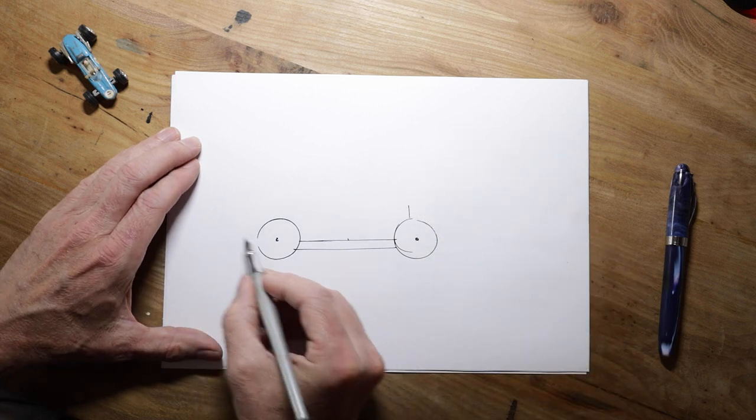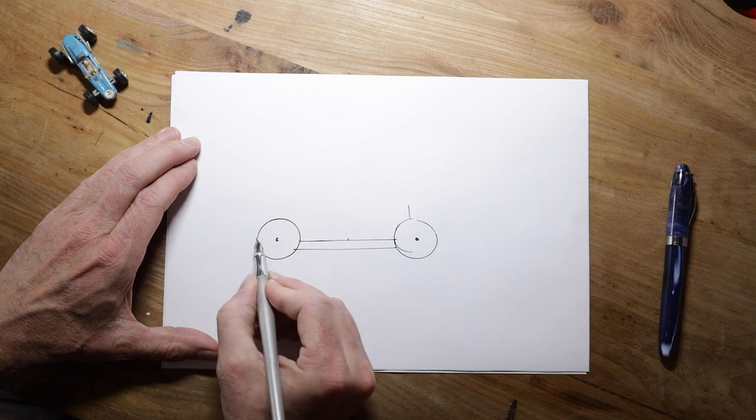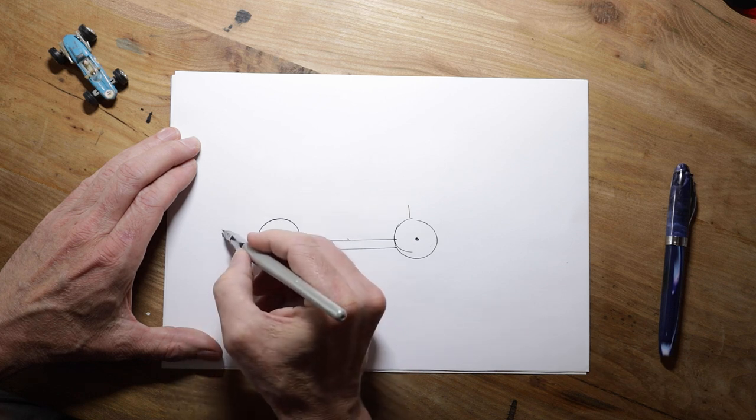Just a bit further back than that center. And the back of the car, the tail, is about three quarters of a wheel further back than the back wheel. So from here, if that's one wheel, the back's about there. Put a little mark in.